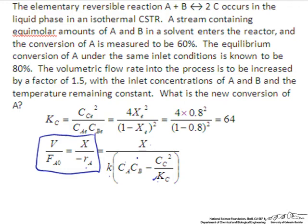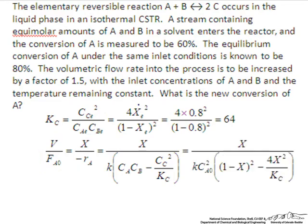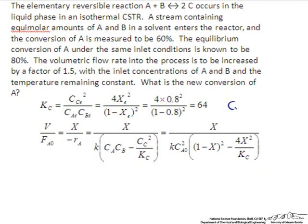We would like to express concentrations in terms of conversion. We've already done this for the equilibrium conversion, and it's the same expressions for conversion when not at equilibrium. We can write that CA and CB are both equal to 1 minus x times CA naught. CC is equal to 2 times CA naught x.